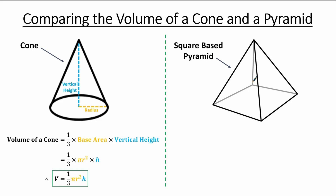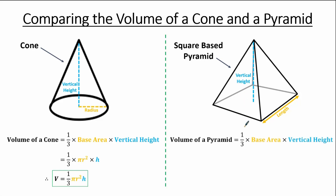To find the volume, we need two measures: the length of one side of the square, and the vertical height of the pyramid. The volume of a pyramid equals one-third multiplied by the base area multiplied by the vertical height — the same as the volume of a cone. What is different is the base area: now the base is a square, so the base area is the length multiplied by itself. Calling the length L and the vertical height H, the volume equals one-third multiplied by L squared multiplied by H.